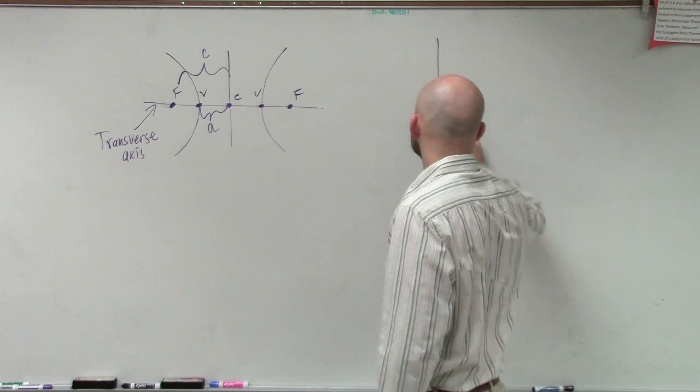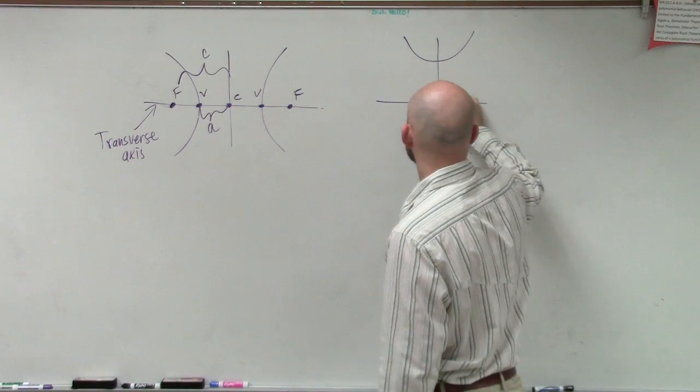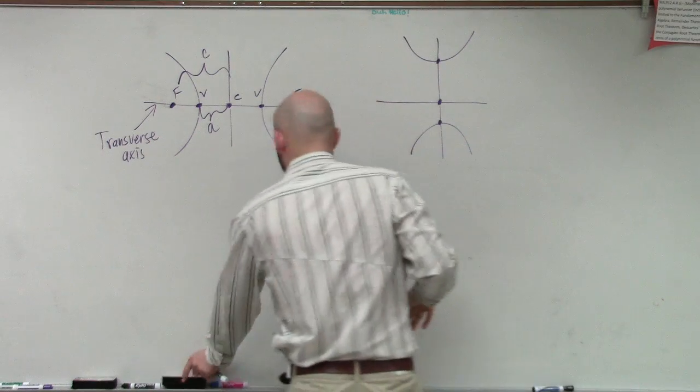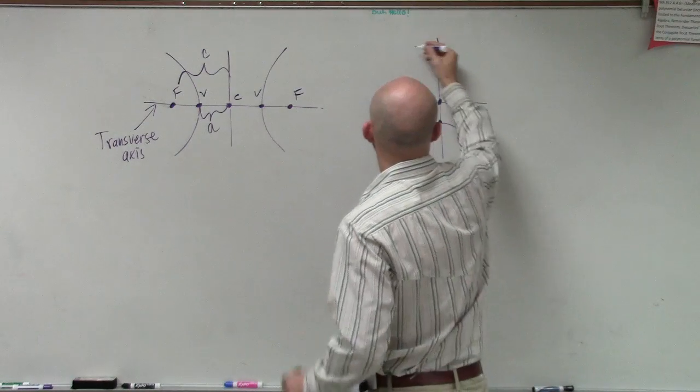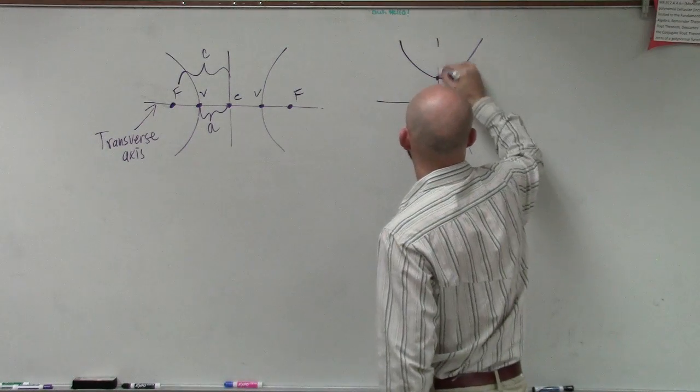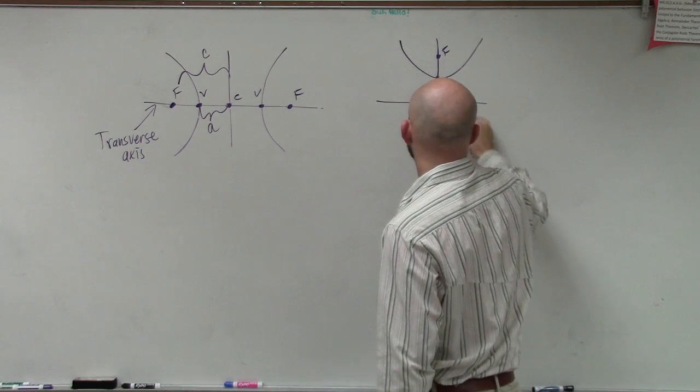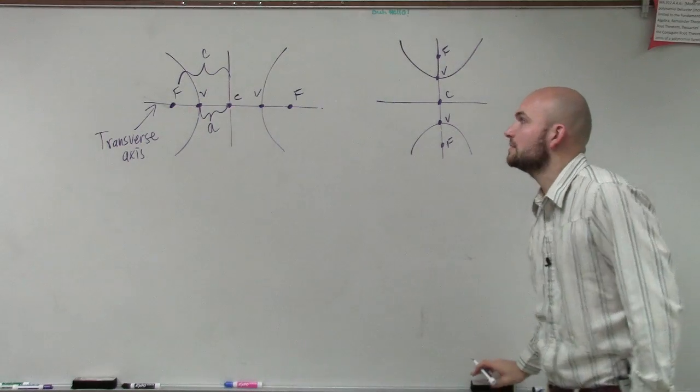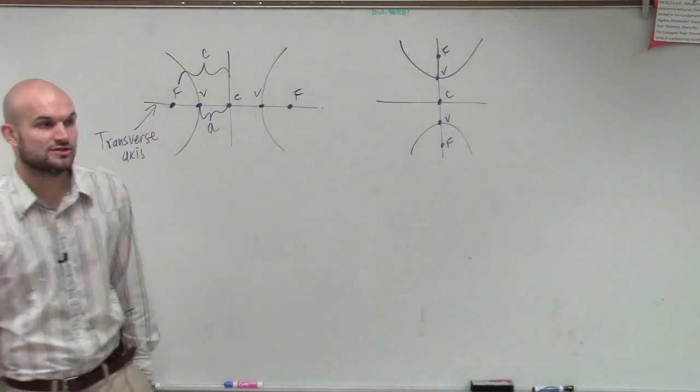And this works if we have a vertical transverse axis as well. This is a horrible graph. Let's redo that one. So you have your foci, your vertices, and center. So now we're looking at this. You can see there are a couple different characteristics.